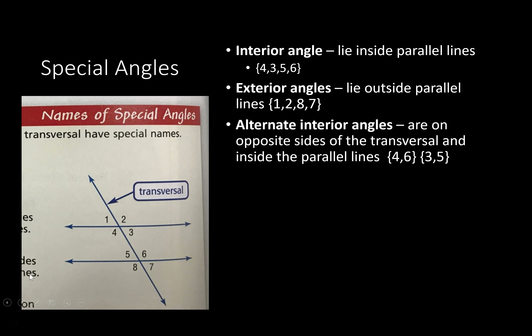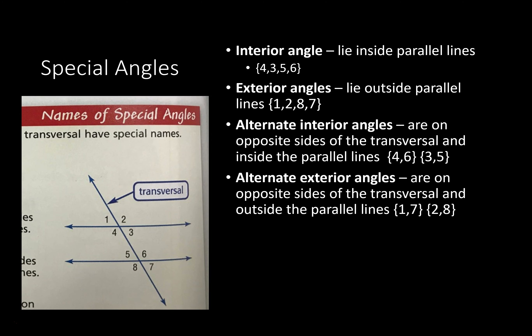Alternate interior angles are exactly what it sounds like — these are the ones that are on the opposite side of the transversal. That would give us four and six as one pair, and three and five as the other pair. Those are on alternate sides of the interior angles, and we'll have some more properties about that later.